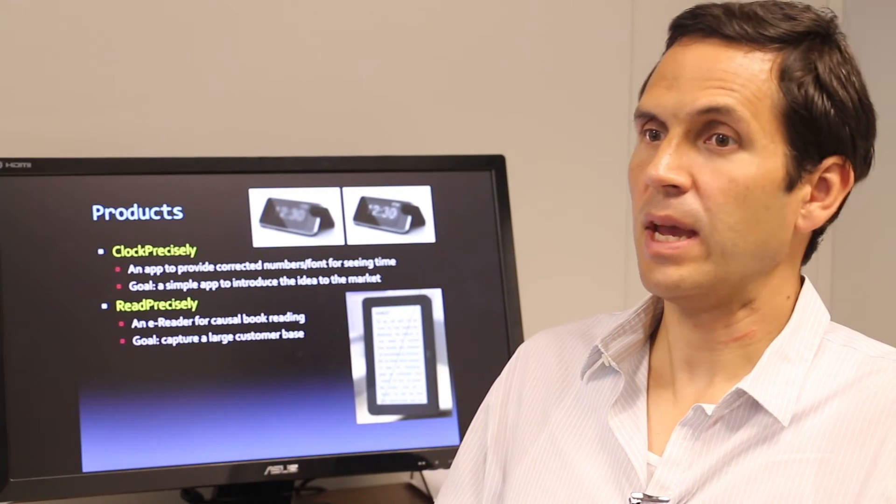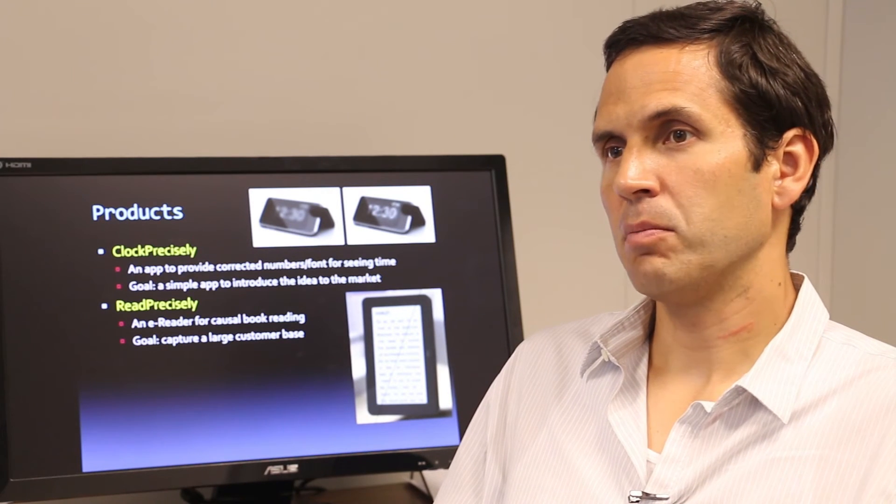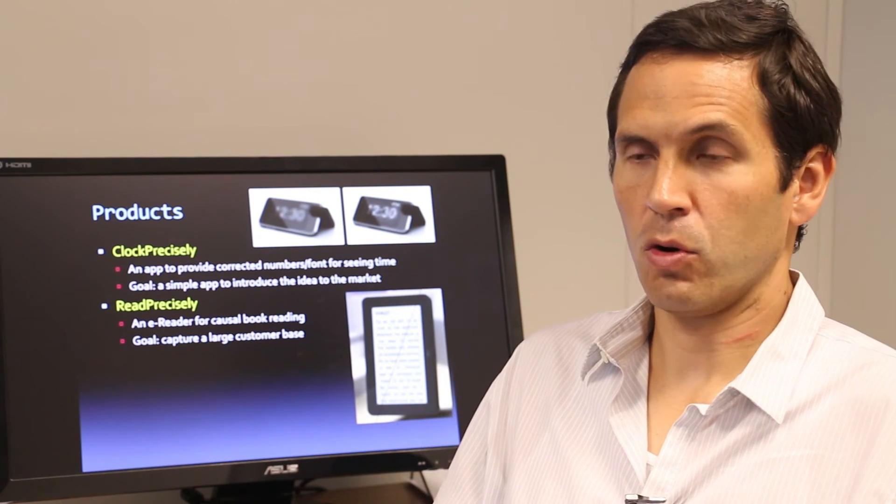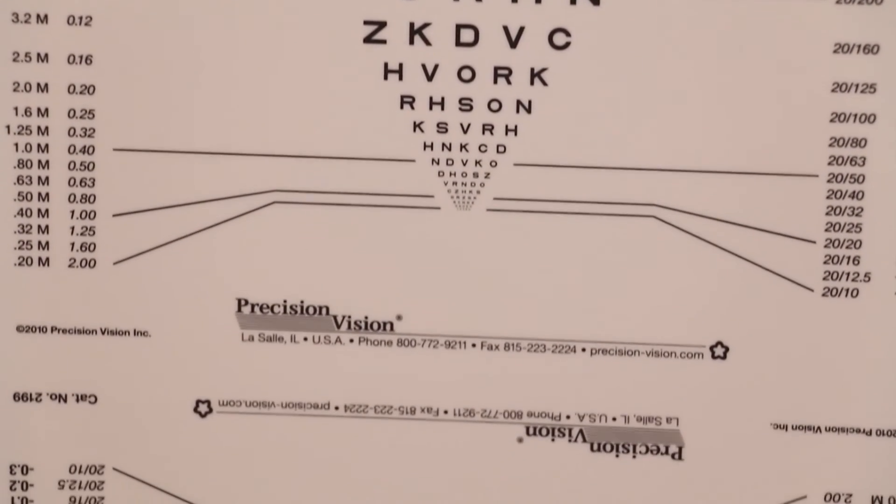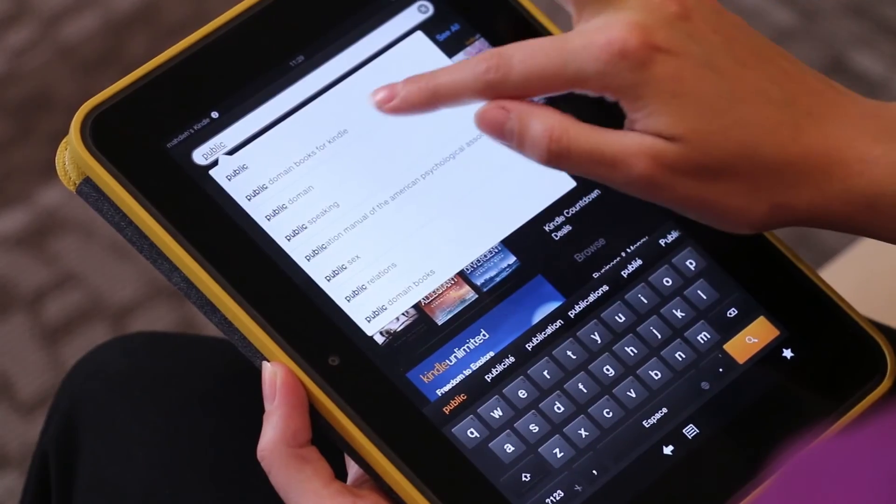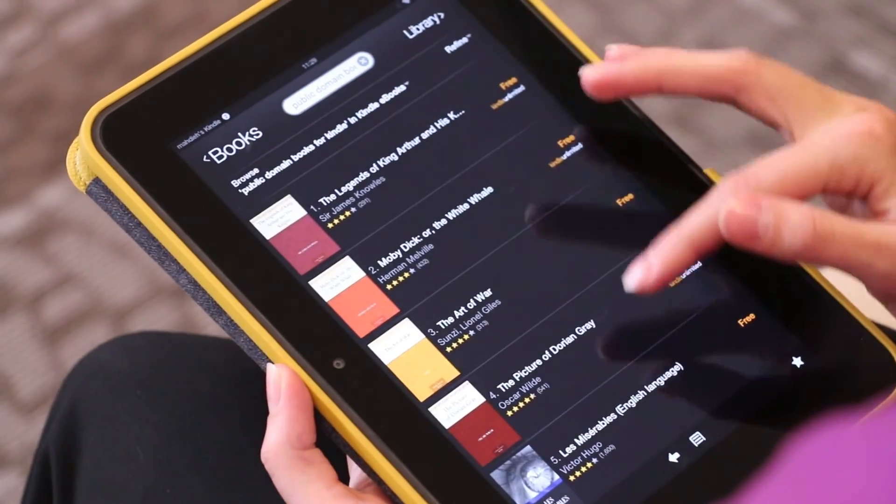Our first application would be electronic book reading. We will focus initially on providing public domain content available on our program, which you can use on tablets, smartphones or laptops, for example. Next, we will make partnerships with major publishing companies and also have that content available.